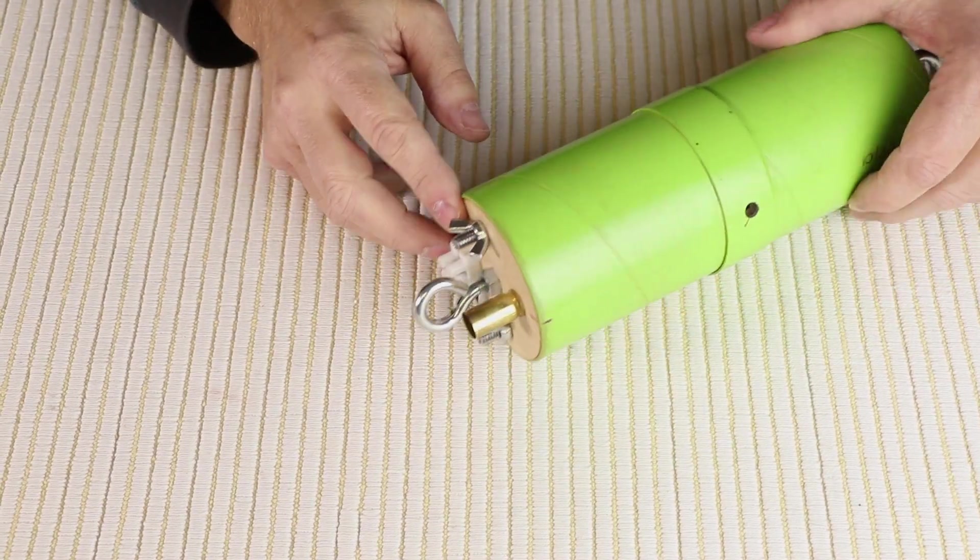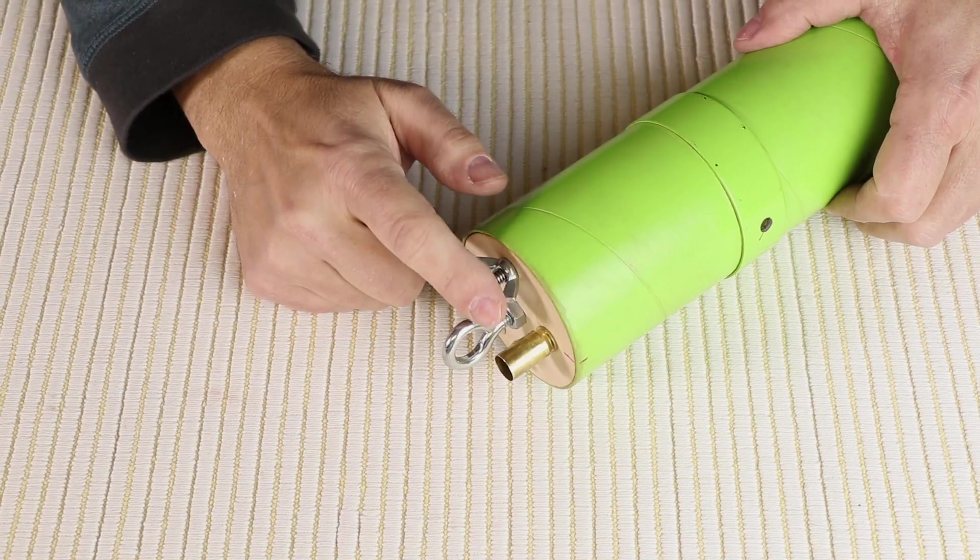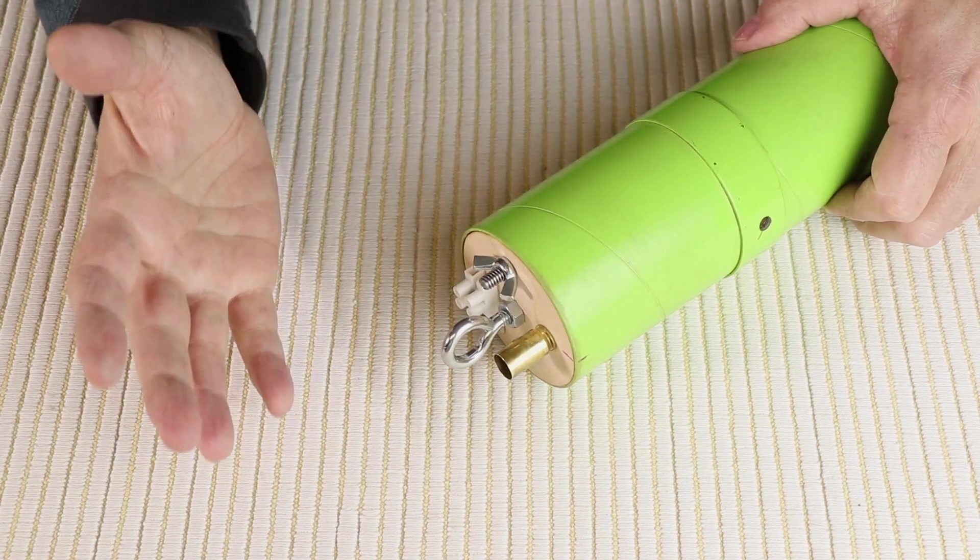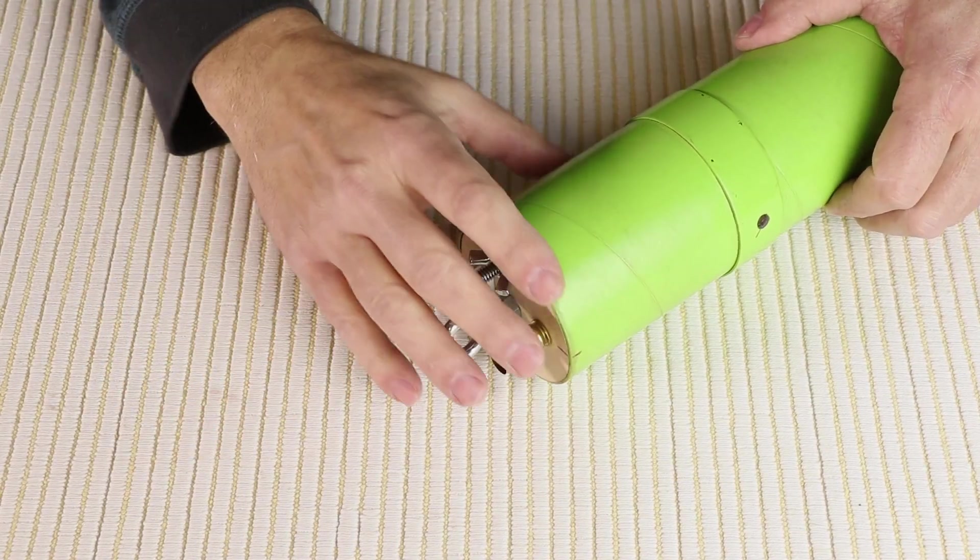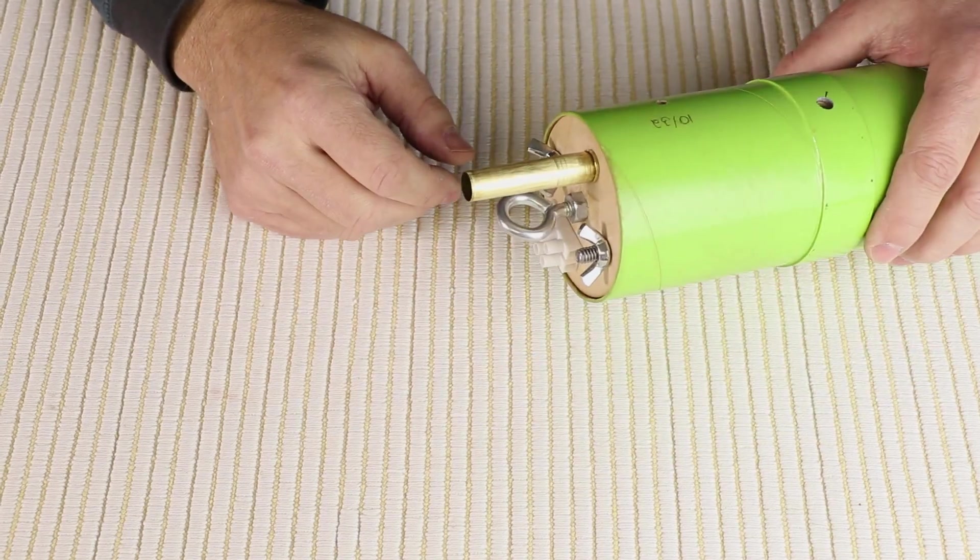The other side is pretty much a mirror image. I have a smaller charge well because I'm not really sure what size I'm going to need. So let's take this thing apart and see what's inside.